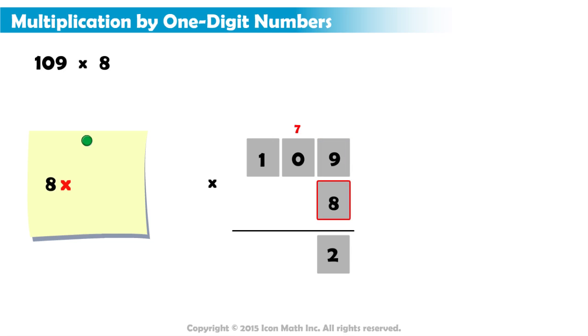Next, we multiply 8 by 0, which is 0. Then, we add the 7 we placed above the 0 to get 7. We place the 7 in the second column to the left of 2.